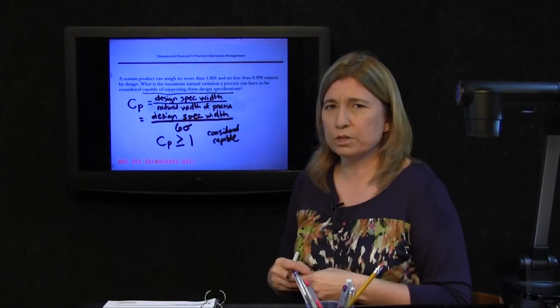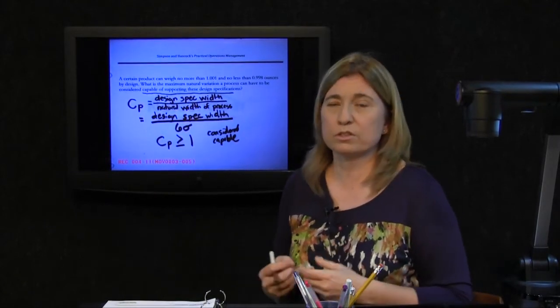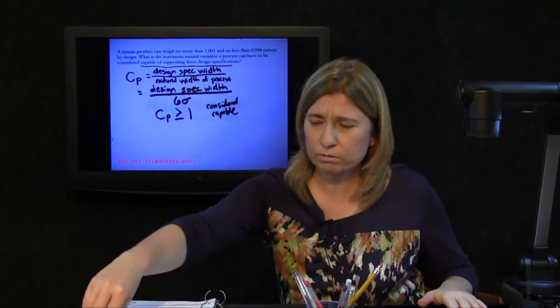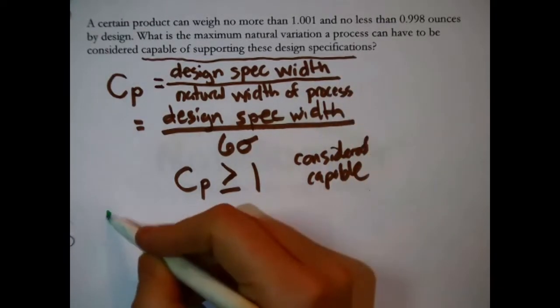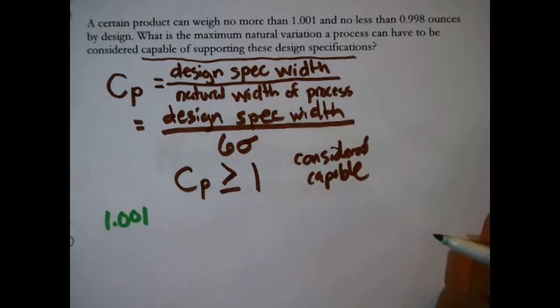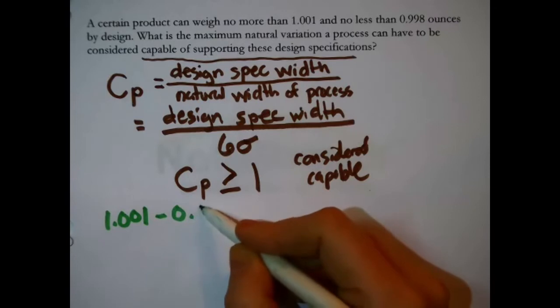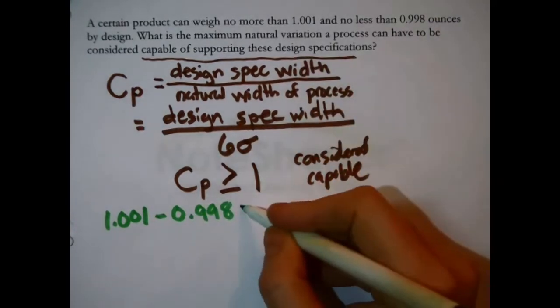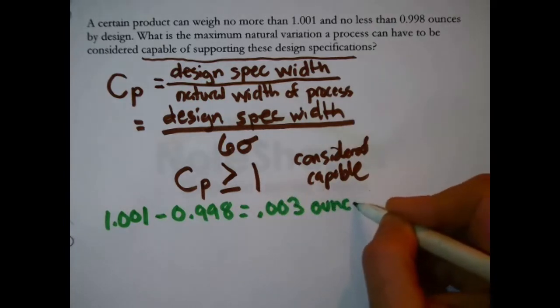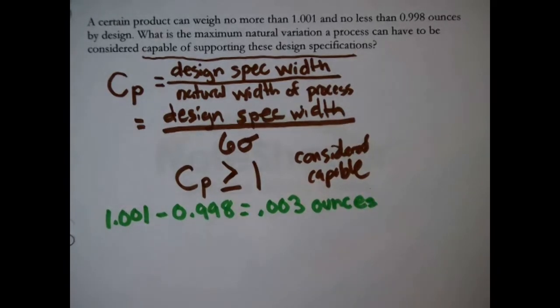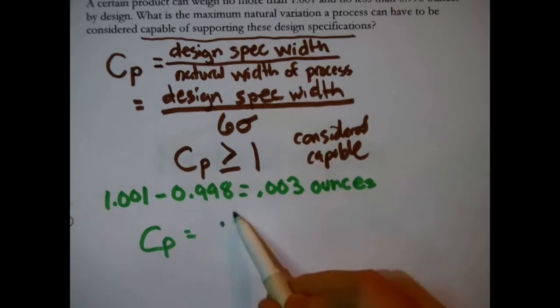So what we want to do is for this particular product, we want to explore the process capability index. Some of the information we have because design specification width, we were told that this product couldn't weigh any more than 1.001 ounces and it couldn't weigh any less than 0.998 ounces, right? That's what was reported to us, which means that I'm just calculating the difference between those two numbers. The design specification width is 0.003 ounces. That's what we mean by design specification, that's all it will tolerate in between. So if you had some certain process and you were kind of auditioning it for this product, then the process capability index, that is definitely what would go in the numerator.